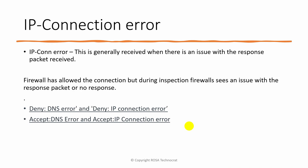What is IP connection error? This is generally received when there is an issue with the response packet received — mostly because of a response from the remote server, and not because the firewall is denying or dropping the packet. The firewall always allows the connection, but during inspection it sees an issue with the response packet or there is no response. You will generally get either 'deny DNS error' or 'deny IP connection error'.